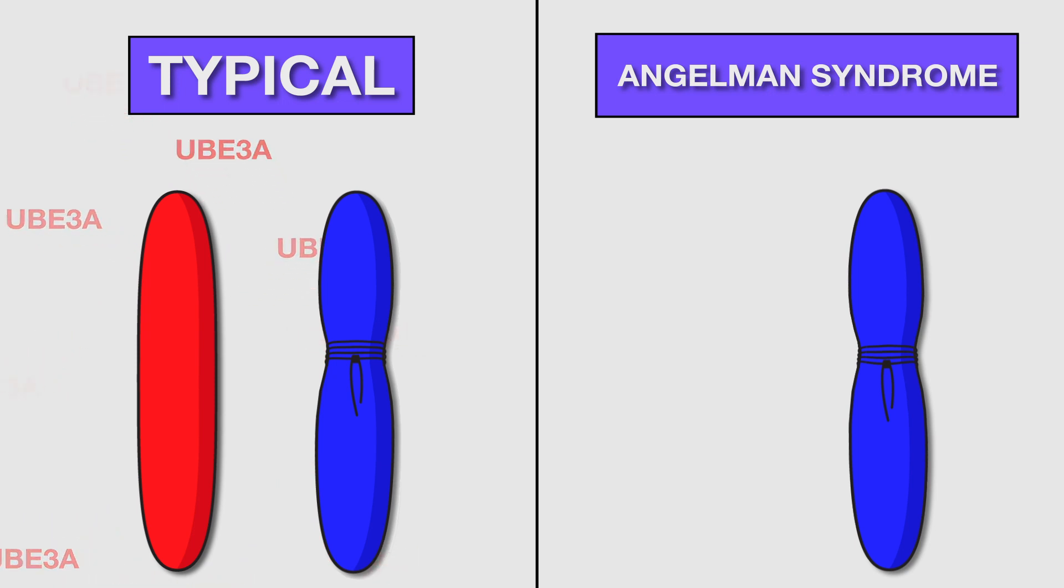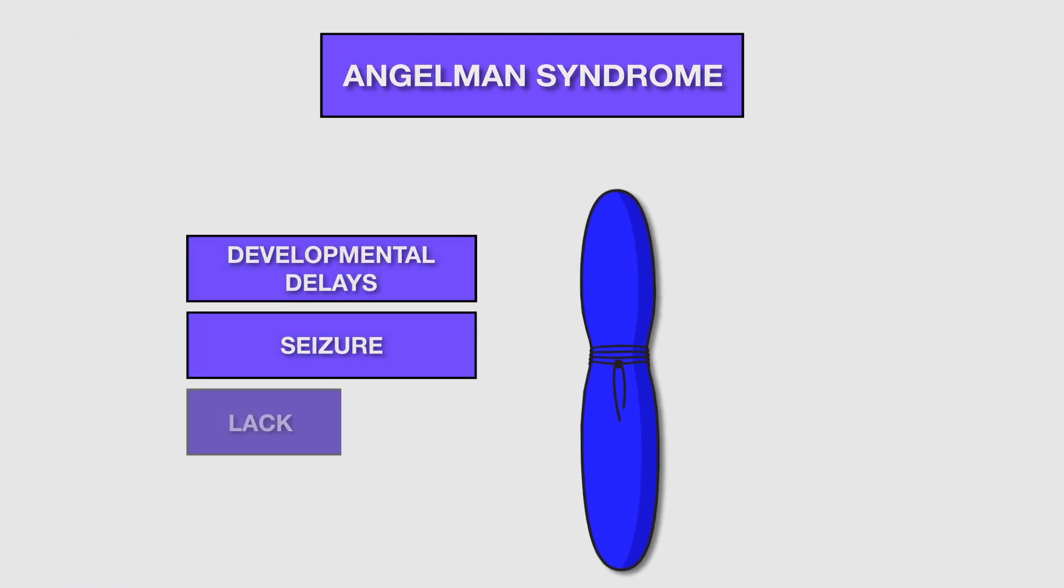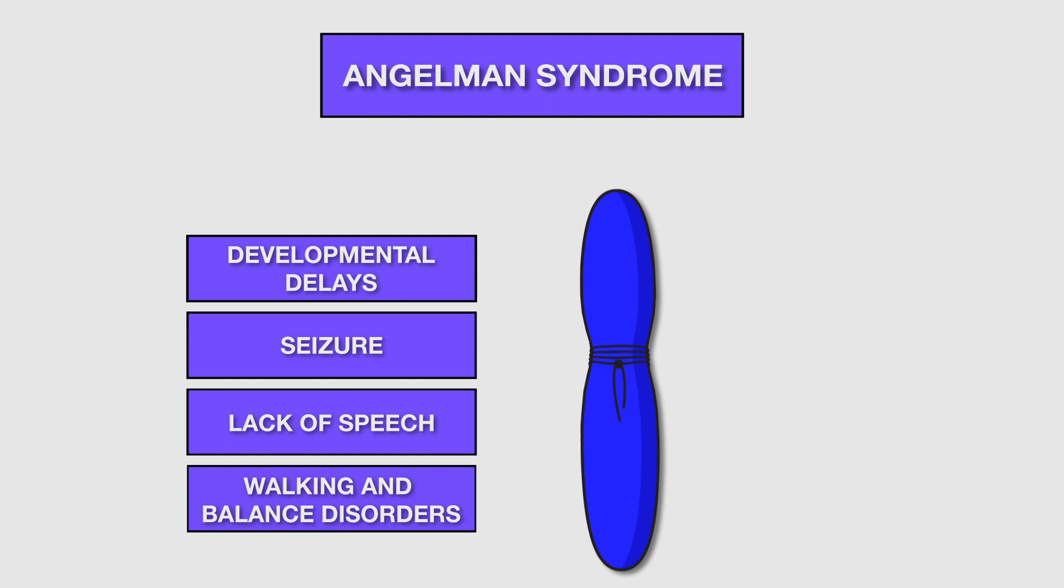Little or no UBE3A results in Angelman syndrome, a rare neurodevelopmental disorder often misdiagnosed as cerebral palsy.